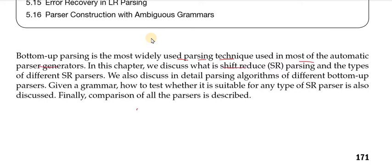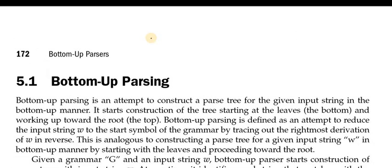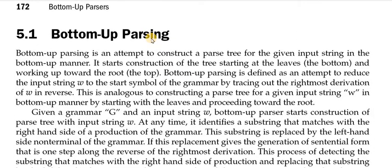In this chapter we discuss what is shift-reduce parsing and the types of different SR parsers. We also discuss in detail the parsing algorithms of different bottom up parsers, and given a grammar, how to test it. We will see this chapter step by step. Bottom up parsing is an attempt to construct a parse tree for the given input string in the bottom up manner.